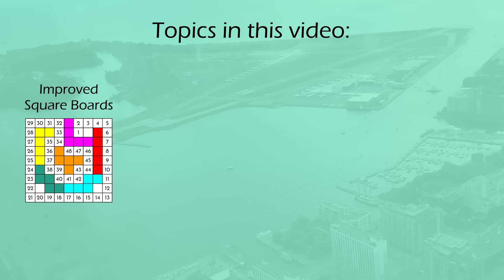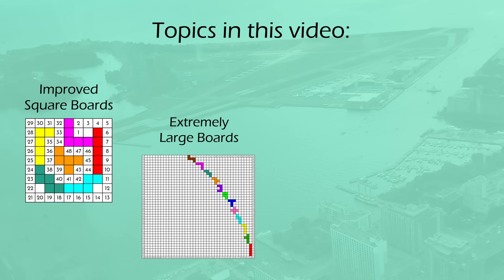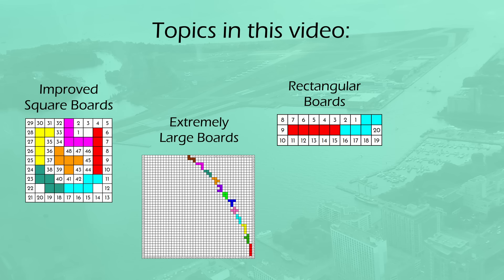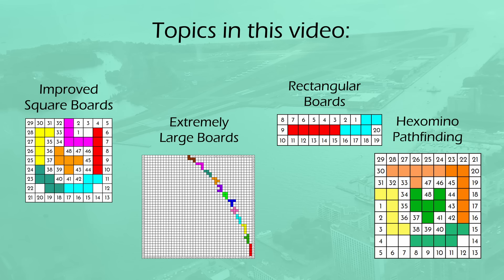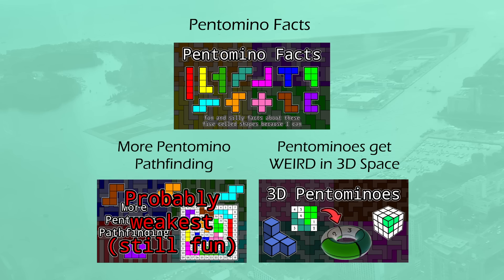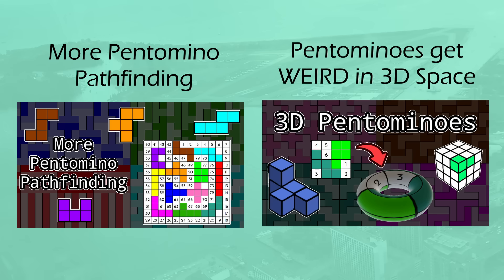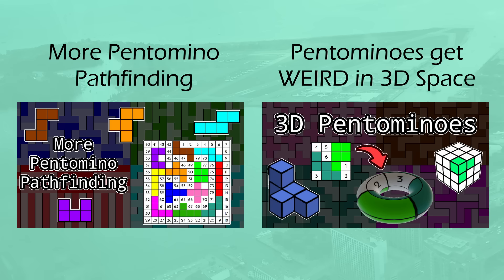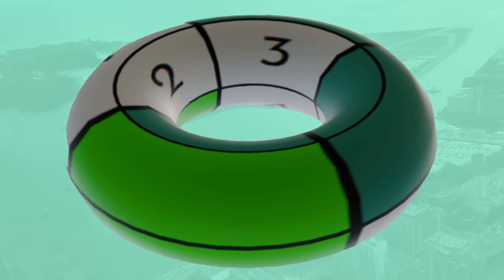I will cover updated square board solutions, since most of the larger ones in the last video have been improved, super large square boards, rectangular boards, and hexomino pathfinding on square boards. Admittedly, I do find that this video is probably the least interesting of the three, but oh well. In part two, I will take Pentominos out of the 2D plane and into 3D, pushing the limits of this puzzle as things start to kind of break.